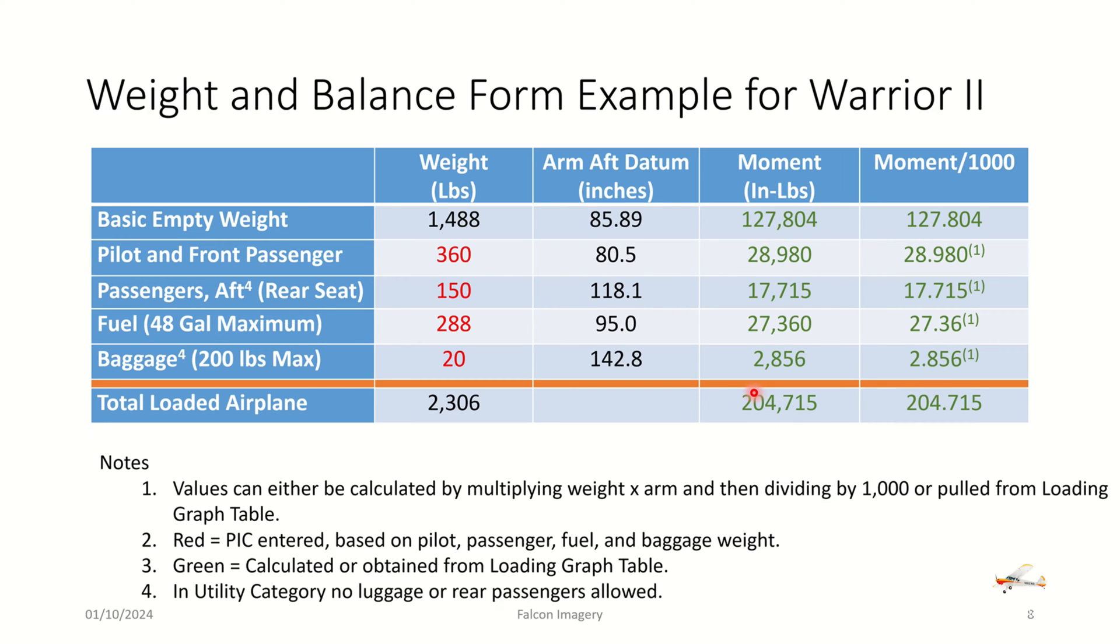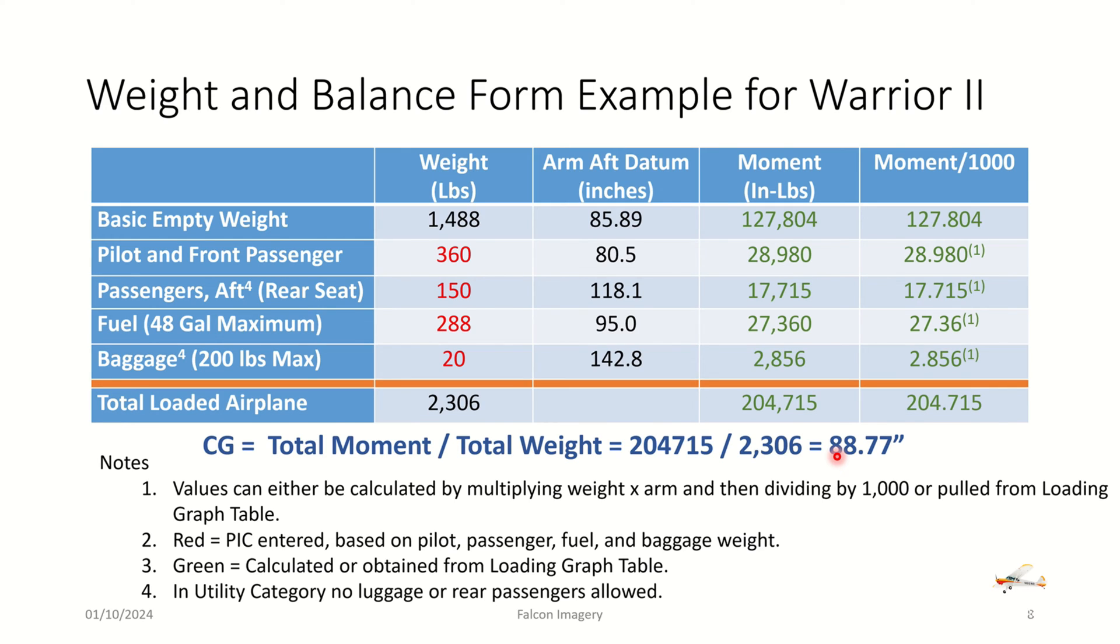So if you remember right, to come up with the center of gravity, it's the total moment divided by the total weight. And in this case here, we see a center of gravity coming out to be 88.77 inches. And then we take that center of gravity, and we'll plot it in the table that's in the POH to make sure that our aircraft is indeed in the envelope for the weight versus the center of gravity envelope. And if it is, we're safe to fly the plane. It will operate under all normal conditions.